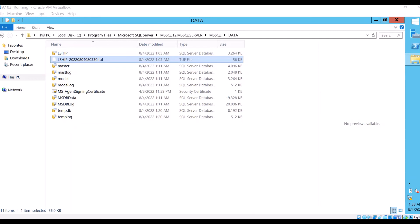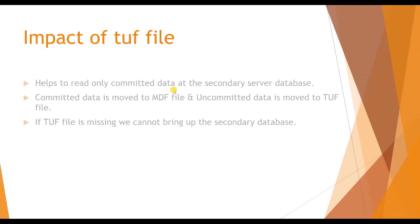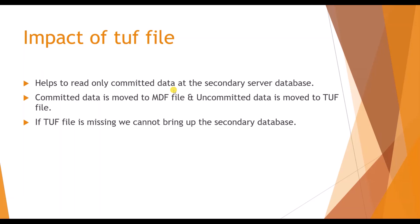The impact of the tough file on log shipping is that it ensures no uncommitted transactions are read by the secondary database — committed data is moved to the MDF file and uncommitted transactions are moved to the tough file. If this tough file is missing we cannot bring up the secondary database, so you must maintain a copy of this tough file when doing any migration. There is also another file called the WRK file, which we will see in our next video.